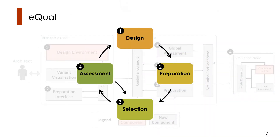eQual provides a four-step approach to this problem. It starts with design and modeling the system and how different pieces fit together. We then ask the engineers a set of questions that help guide eQual throughout the exploration process. And then we have the selection and assessment phases that happen iteratively and allow us to reach an optimal or close to optimal solution.